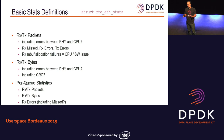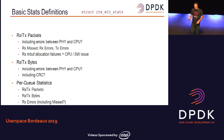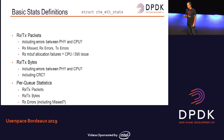The problem is that this structure is very badly defined. There are a few comments, but they are not meaningful. We don't really know which error we are including in these counters. About counting bytes, we don't even know what we are counting — are we counting CRC or not — and a lot of these statistics are not exactly the same depending on the drivers.